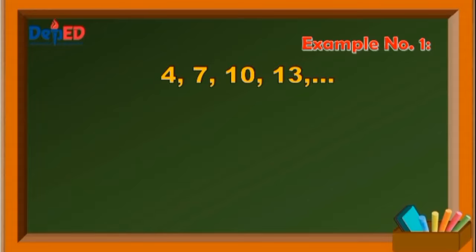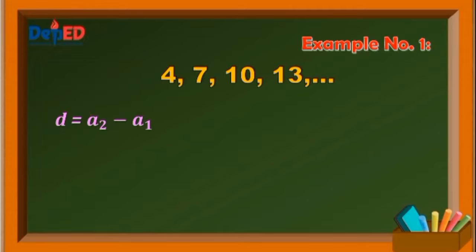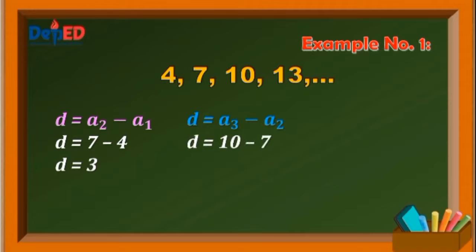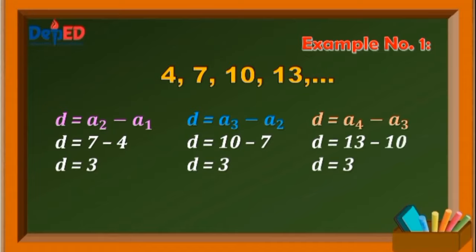To get the common difference, just simply subtract any term of the sequence by its previous term, such that D is equal to a sub 2 minus a sub 1. Take note, do not interchange these values. The subtrahend should always be the previous term. This is equal to 7 minus 4, then 10 minus 7. Therefore, D is equal to 3. Lastly, get the difference between 10 and 13. D is equal to a sub 4 minus a sub 3, which is equal to 13 minus 10. So D is also equal to 3. With this, we find out that all their differences are common or equal.